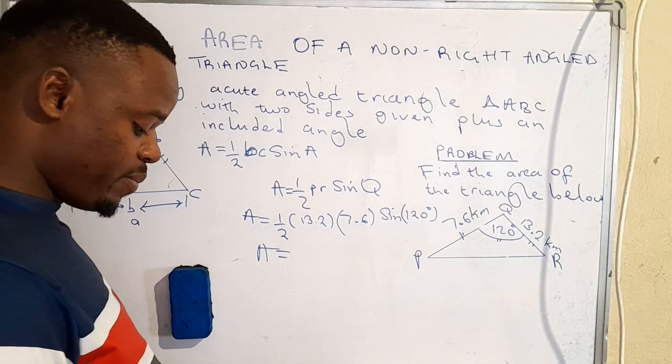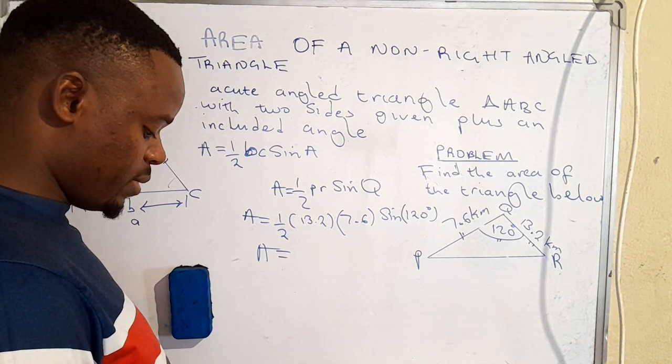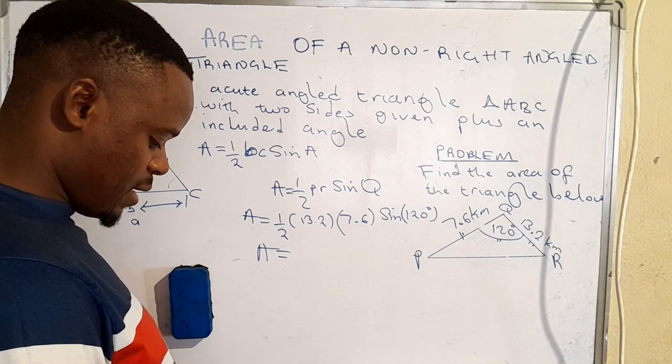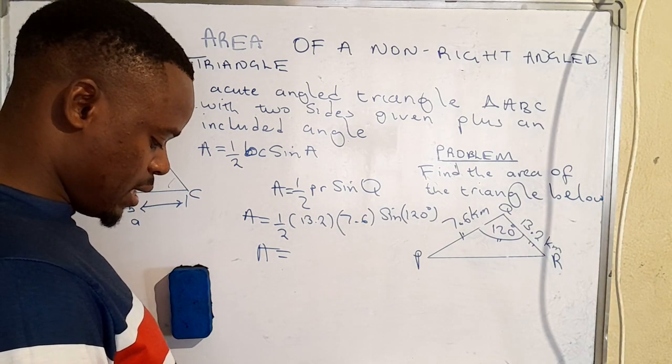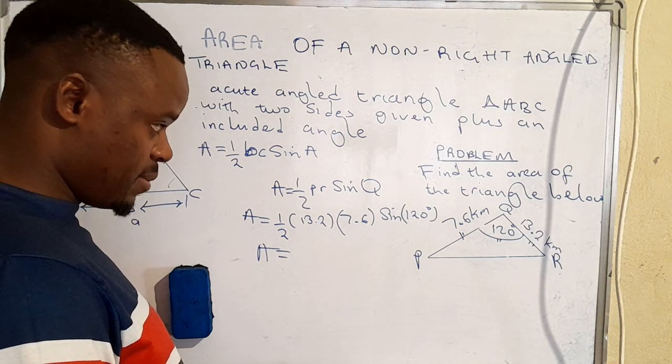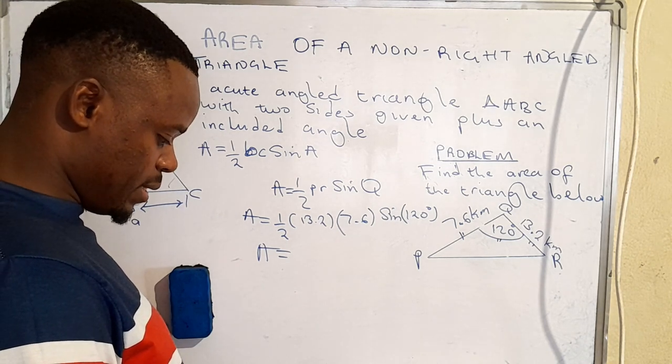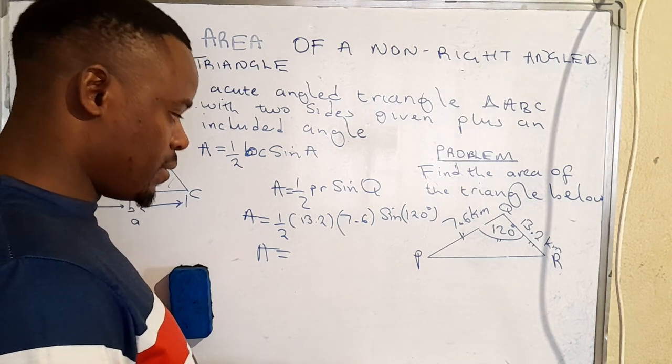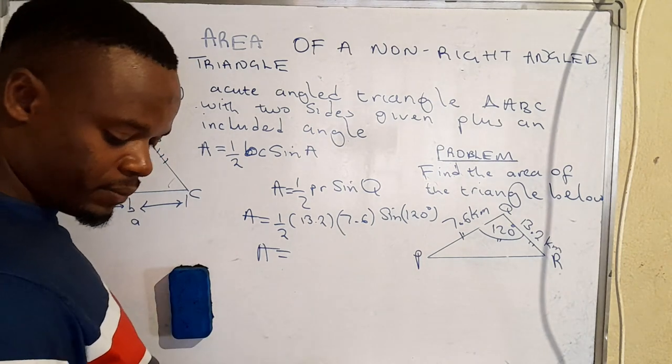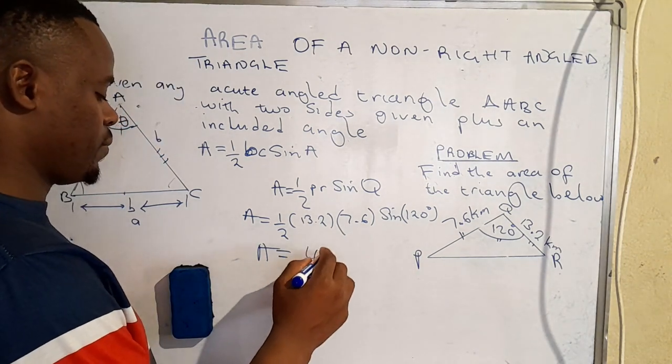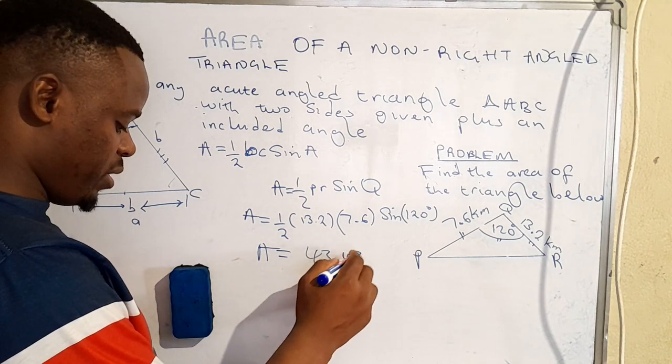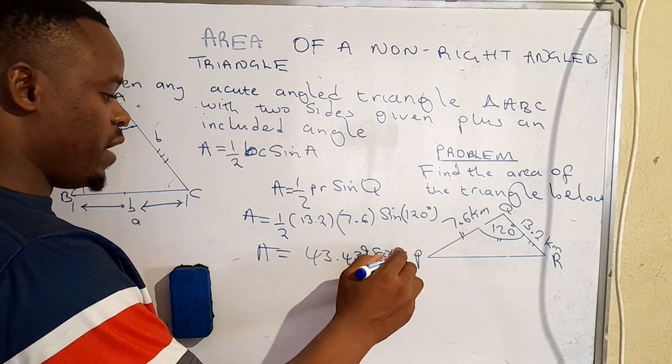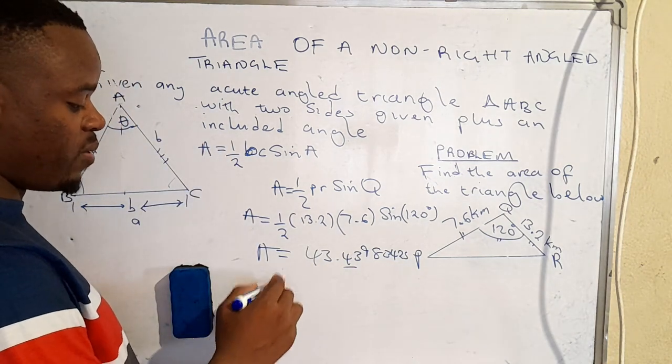sine the angle that has been given as sine 120 degrees. So area therefore will be, it's just one of you punching the calculator, so that would be half times 13.2, then 7.6, then sine 120, and the answer is 43.43983425.